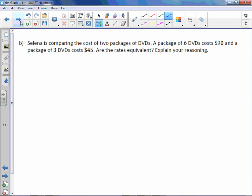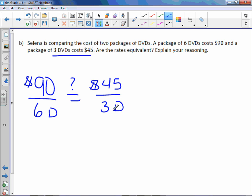Letter B. Selina is comparing the cost of 2 packages of DVDs. A package of 6 DVDs costs $90. So $90 for 6 DVDs. And we want to know if this is equal to a package of 3 DVDs costs $45. So $45 in dollars and 3 DVDs. How do we get from 6 to 3? Well, we can divide by 2. And to get from 90 to 45, we also divide by 2. So these ratios are equivalent because you're dividing by the same number. So long as you multiply or divide by the same number in the numerator and denominator, they are equivalent ratios.